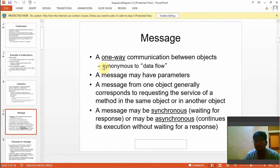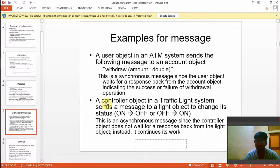What is a message? One-way communication between objects, synonymous to data flow. The message may have parameters, and a message from an object generally corresponds to requesting a service or method in the same object or in a different object. Examples are like ATM withdrawal with a message 'withdraw amount: double'. This is an example of how we write a message in a collaboration diagram.